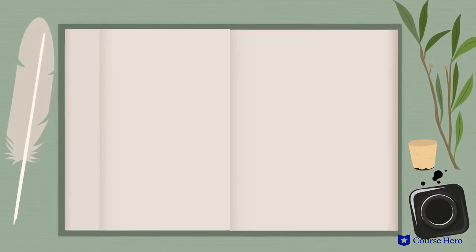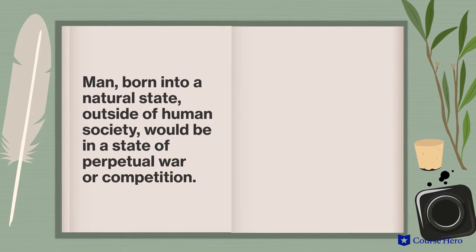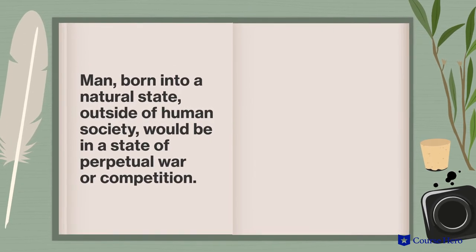Thomas Hobbes postulates that man, born into a natural state outside of human society, would be in a state of perpetual war or competition. Living in such a state would be terrifying, and life itself would be constantly at risk of being cut short.